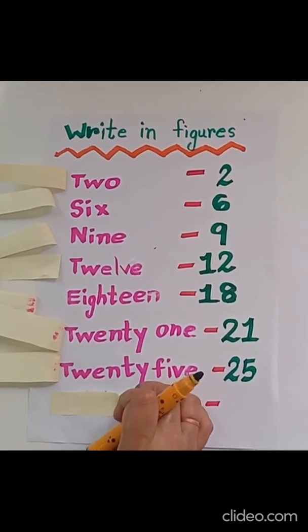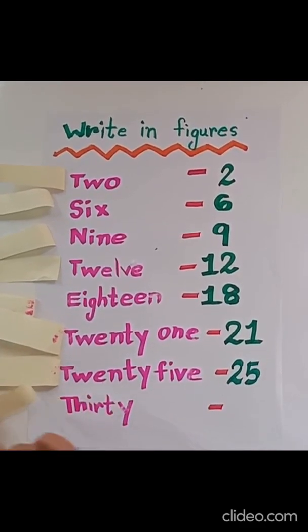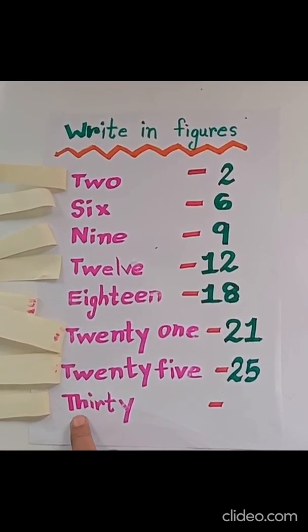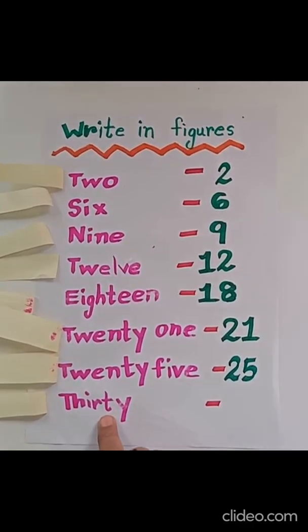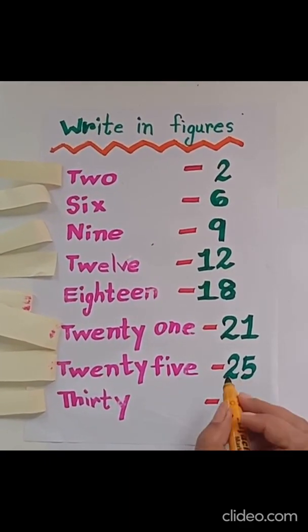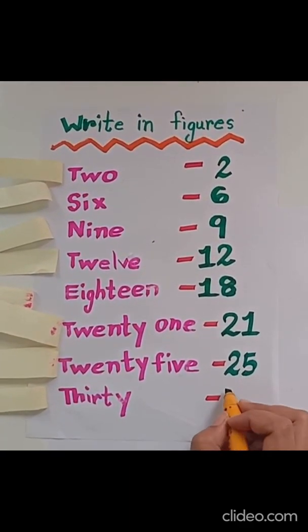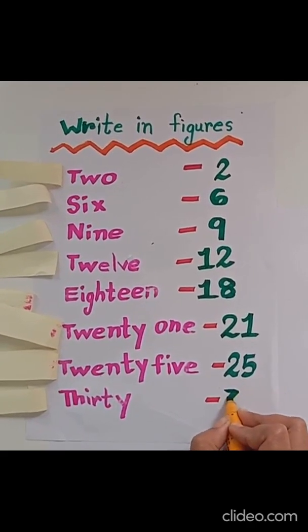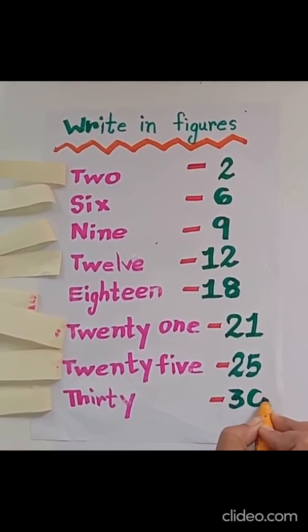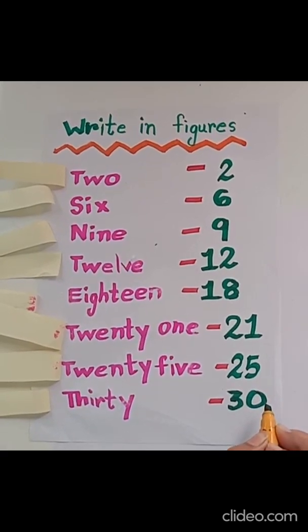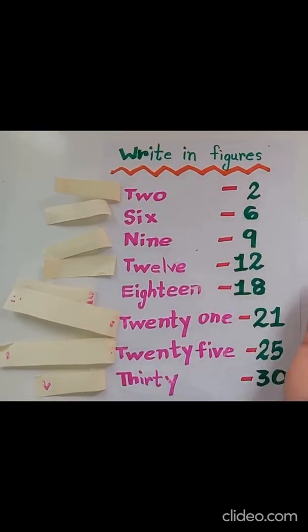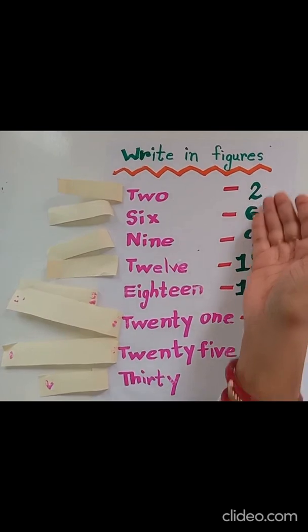Let's see the next number name, children. T-H-I-R-T-Y, 30. So we will write 30. So we have found out all the figures.